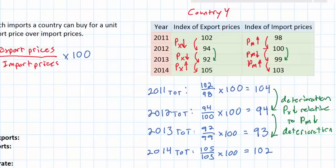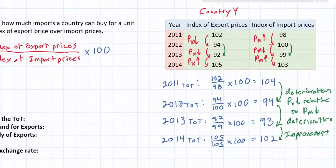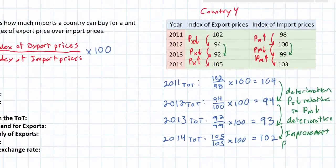Things are not looking too good between 2011 and 2013 regarding country Y's terms of trade — in both years, 2012 and 2013, they have deteriorated. However, we then see a drastic improvement in country Y's terms of trade. When the value of the terms of trade increases, we say the terms of trade have improved, meaning the price of country Y's exports have increased relative to the price of imports.